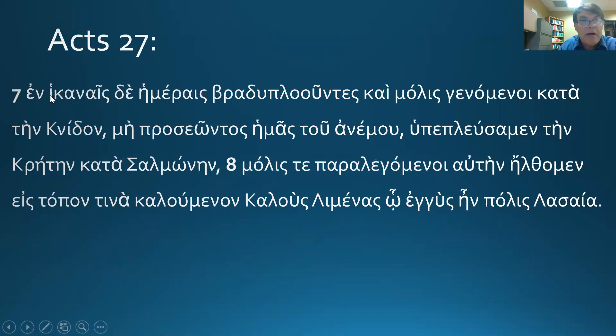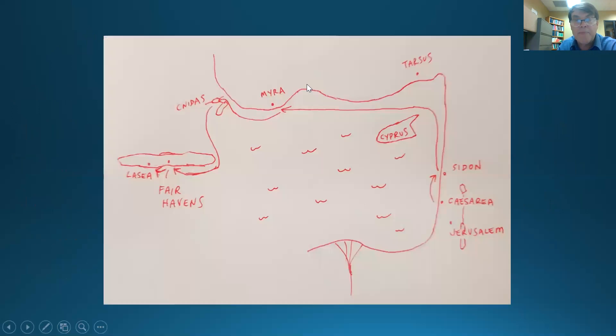Verse seven. And for some days, for sufficient days, going slowly, sailing slowly. Here's a word. Memorize that one. Braduploō, sailing slowly and scarcely having come into Cnidus. So this is a present active participle. My ant is an active participle and it's the present stem. There's been a little crash here. There's the police line, but so Cnidus is right here above Rhodes. This is a bad drawing of Rhodes and this is Cnidus.